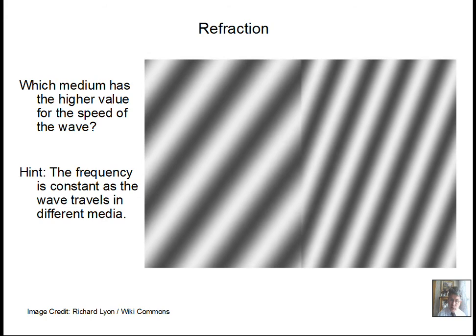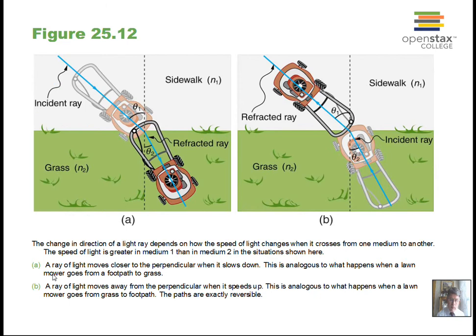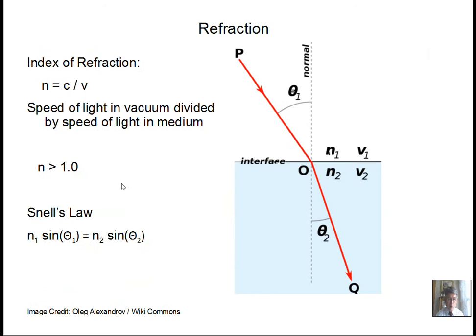Analogy: if you're mowing a lawn and push the mower from sidewalk into grass, the wheels in the grass experience more drag before the other wheel, causing the mower to turn automatically. That's analogous to refraction — one side of the wavefront slows down before the other, causing the wave to bend. This relationship is described by Snell's Law, which relies on a property of the material called the index of refraction.